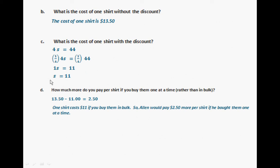For part C, the cost of one shirt with a discount is $11. And then using that information, finding out how much more you pay per shirt, so the difference between one shirt and another.